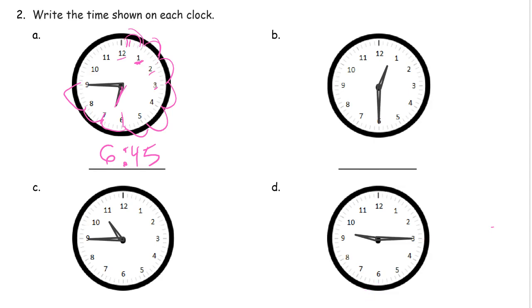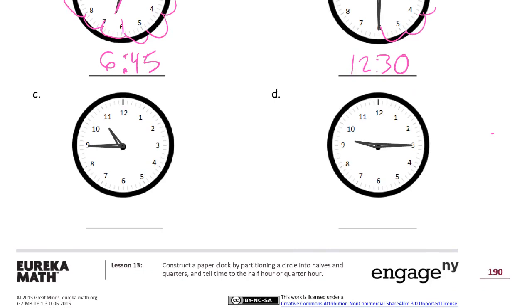This one — the hour hand first — is in between the one and the twelve. So it's after twelve o'clock but it's not one o'clock yet. And the minute hand is five, ten, fifteen, twenty, twenty-five, thirty. Here, the hour hand is in between the ten and the eleven, so it's after ten but it's not eleven yet.